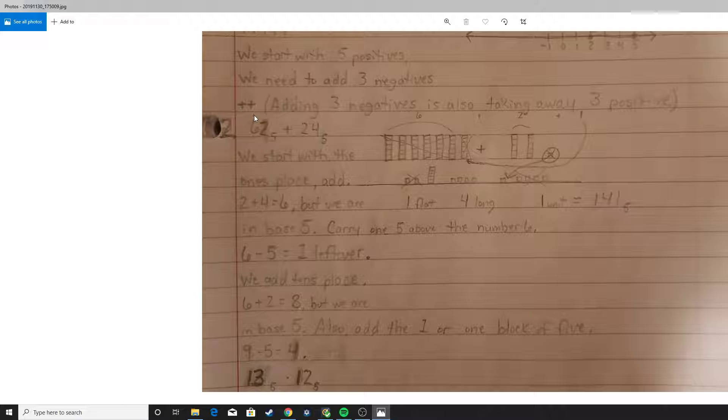So in base 5, we have 1 five, we have 1 five, and we have 4 left over. So our answer is 141 in base 5. Now that was a little quick, so if we look at these base blocks, it's a little bit different.